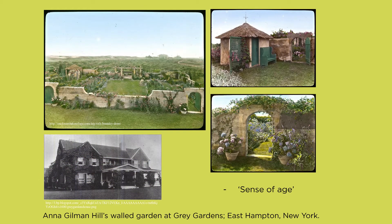My favorite non-local example is Anna Gilman Hill's walled garden at Grey Gardens in East Hampton. A big part within this period was to replicate a sense of age, since we're looking to the past for inspiration. These colorized images show the garden shortly after construction, but it's meant to look like it's been there for ages — in fact they are poured concrete walls punctured with doors and windows, an individual garden tool shed, arbors, trellises, and a raised platform looking out over the wall to the surrounding landscape. During this period, it was also increasingly common to see female landscape designers and landscape architects.